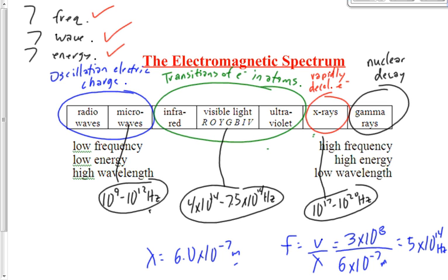So instead of memorizing 21 different ranges like some students do, you only need to memorize 3 frequency ranges and calculate or deduce the other 18. That's a much more manageable approach.